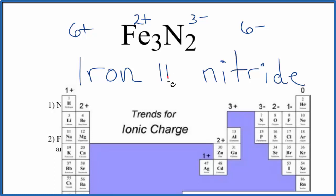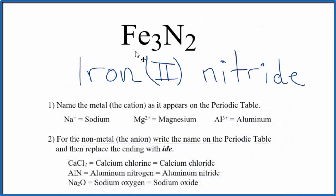And because of that, we write a Roman numeral 2 after the iron to show that this iron has a 2 plus ionic charge. So the name for Fe₃N₂ is iron(II) nitride, and the 2 tells us the ionic charge on each of these irons.